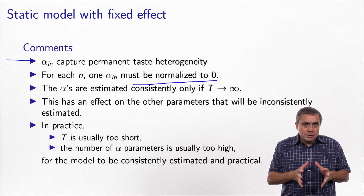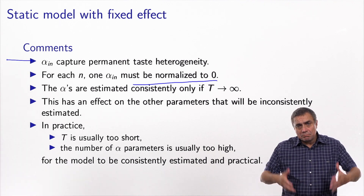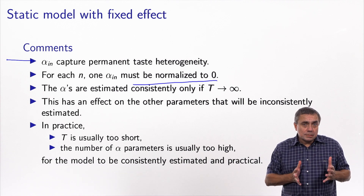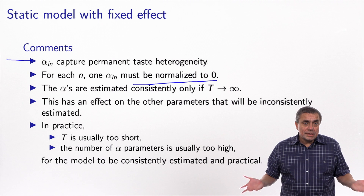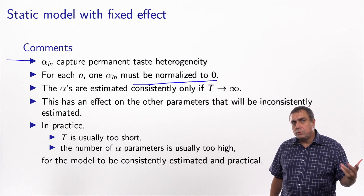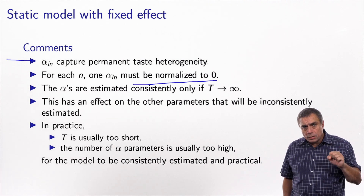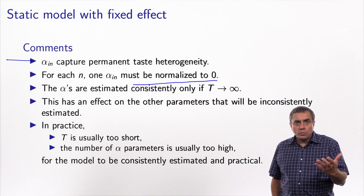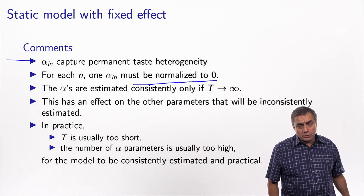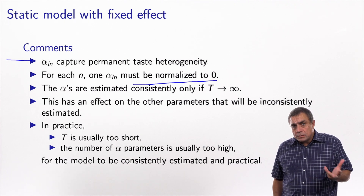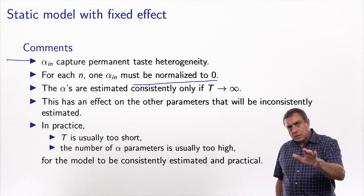In practice, T is usually relatively short — perhaps a handful or hundreds of time periods. In that case, the asymptotic results do not apply, and this may affect the quality of the estimates of the other parameters. You may actually pollute your model if you don't have enough observations. The exception is when modern technology, such as smartphones, allows logging a large amount of data for the same individual over long periods. In that case, the fixed effect technique is appropriate.